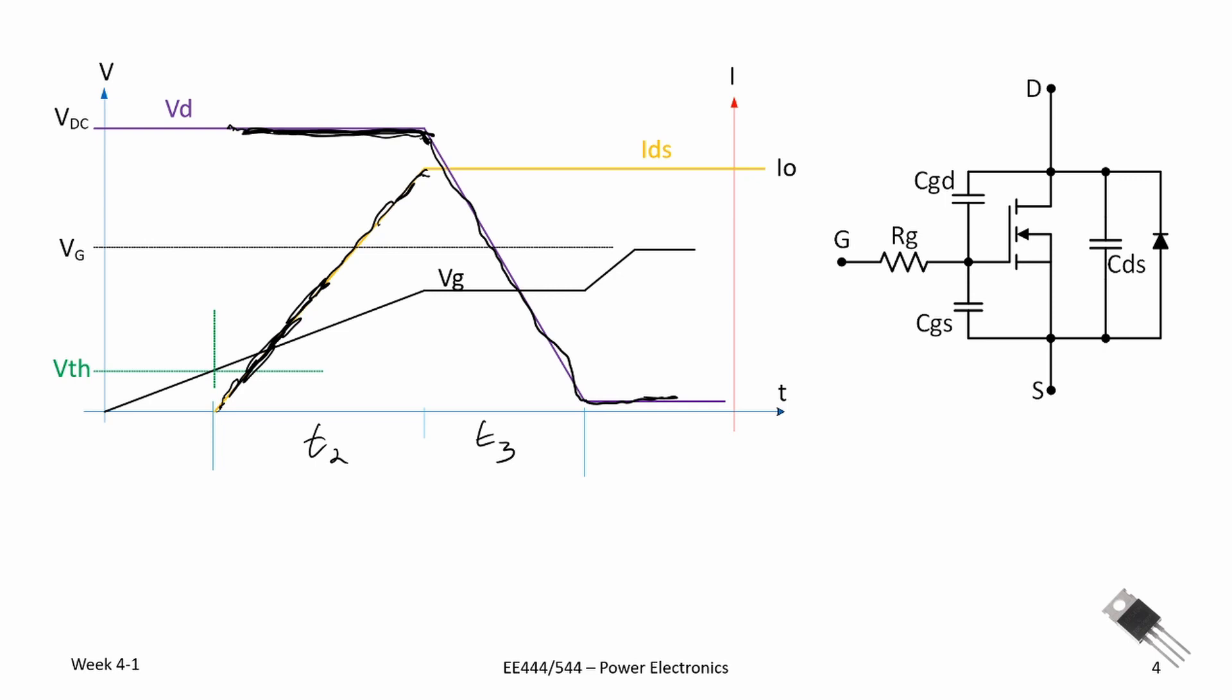And what that will provide for us is an instantaneous power during the turn-on time that goes up to a point, I drain-to-source times V drain-to-source, and then falls back down over a period of T3 with a peak value of the product of these two.